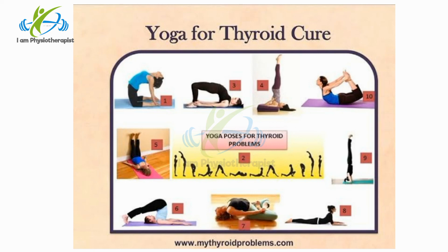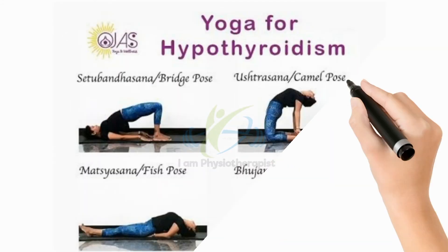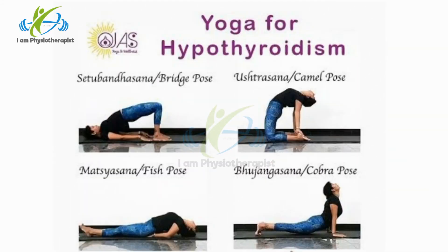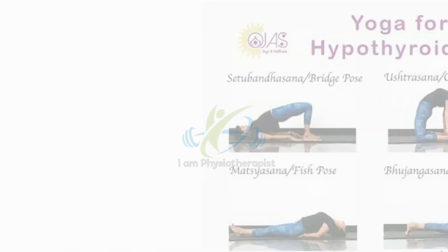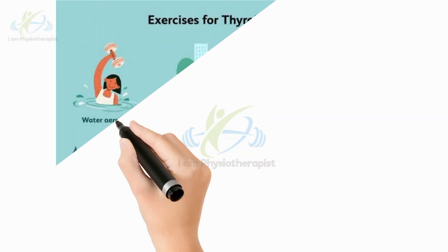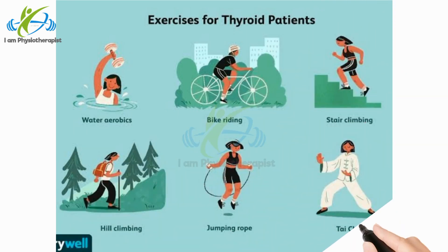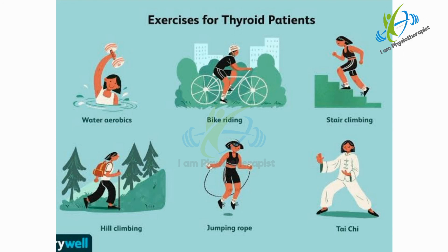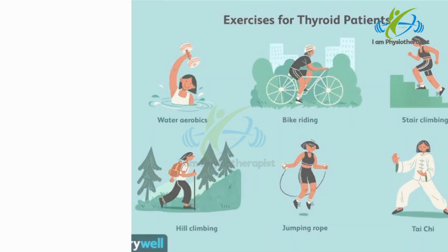Exercise therapy helps to rebuild activity tolerance, increase muscle strength, and reduce apathy secondary to the decreased metabolism caused by the disorder. However, exercise should only be implemented once the patient has begun hormone replacement therapy. Many patients with hypothyroidism have comorbid heart conditions, and increasing aerobic activity can benefit cardiovascular health and reduce risk factors for cardiac events.